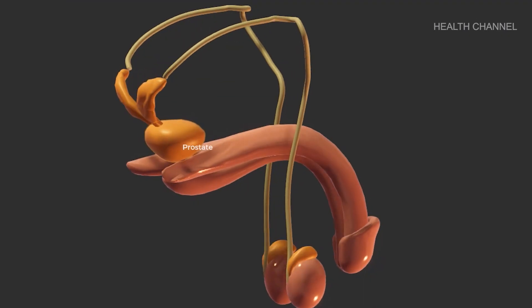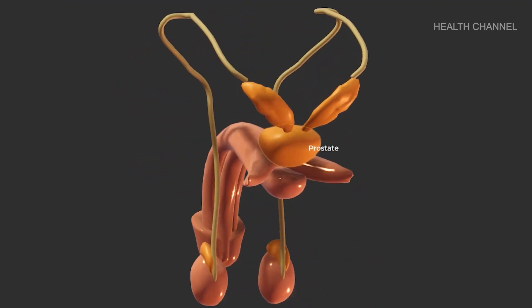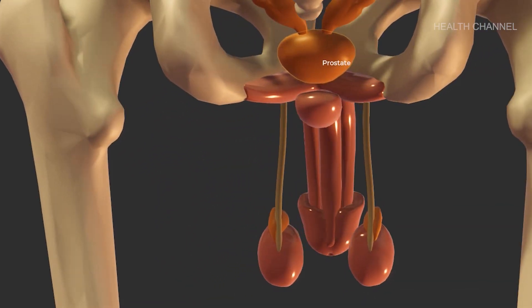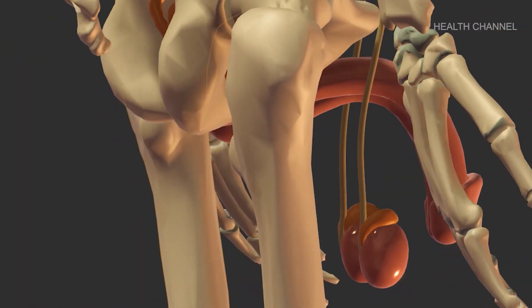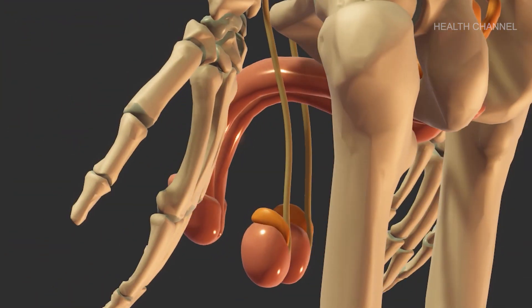The prostate gland is a walnut-sized organ placed underneath the bladder and in front of the rectum. The prostate gland provides more fluid to the ejaculate. Prostate fluids also aid in the nutrition of sperm. The urethra, which transports the ejaculate released during orgasm, goes through the prostate gland's core.